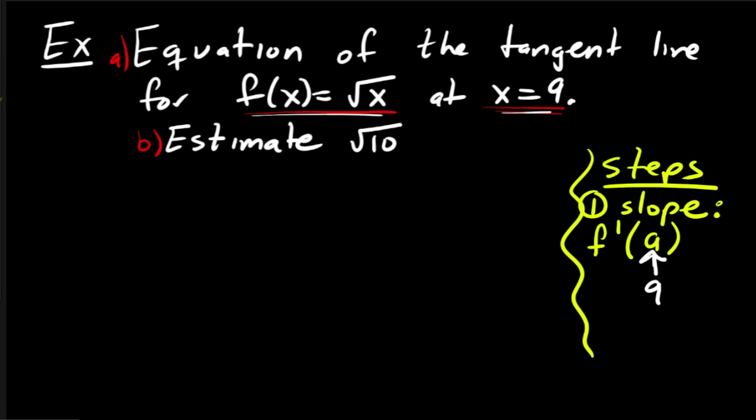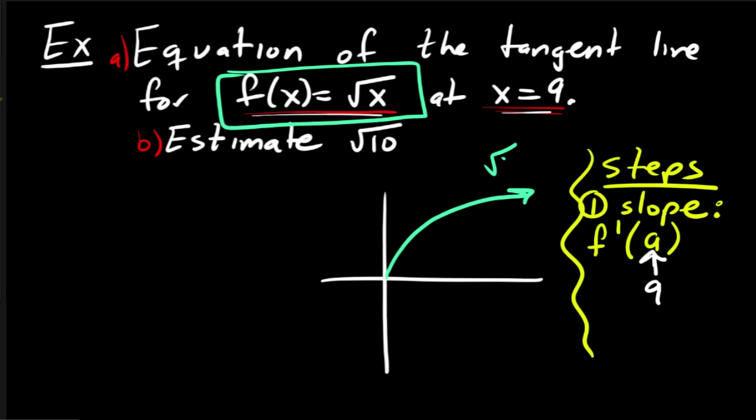Now before I actually do that, I want to draw a picture because having a visual is important. So let's say I've got the function here, square root of x, so I've got a rough picture, that's square root of x, and then let's just say that 9 is right here.